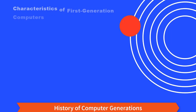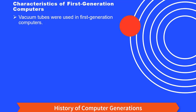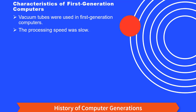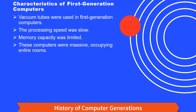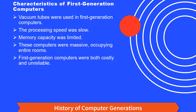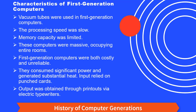The following are some characteristics of first generation computers. Vacuum tubes were used in first generation computers. The processing speed was slow, and the memory capacity was limited. These were expensive, occupying entire rooms. First generation computers were both costly and unreliable; they consumed significant power and generated substantial heat. Input relied on punch cards, and output was obtained through printouts via electric typewriters.